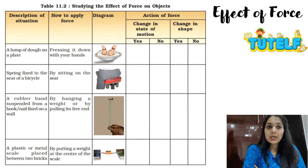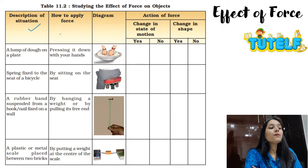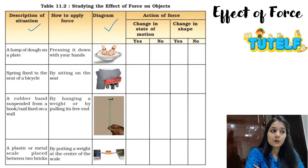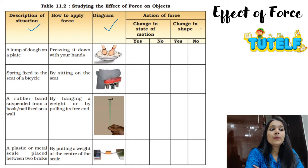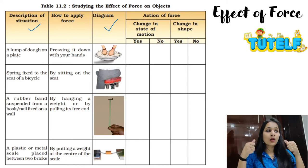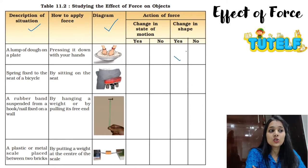Let's quickly go through this table. It describes a situation, how force is applied, includes a diagram for visual support, and asks you to identify the action of force — whether there is a change in state of motion or a change in shape. First case: a lump of dough on a plate being pressed down with the hands. There will be no change in state of motion, but there will definitely be a change in shape — so I'll click yes for change in shape.